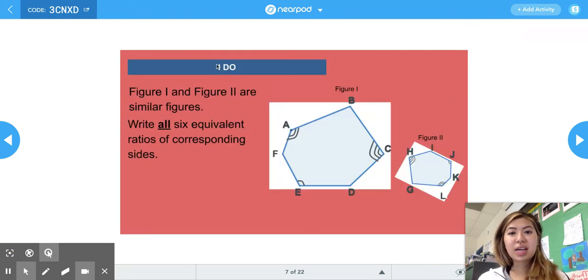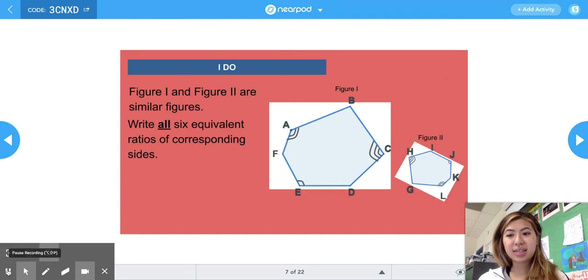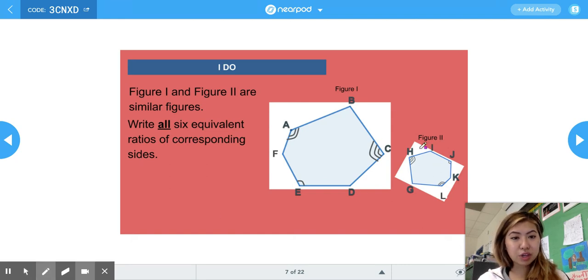So for this first I Do, it says figure one and figure two are similar figures. And as you can see, it's been rotated. So figure two is not the exact way we see figure one. And we have to write all six equivalent ratios of the corresponding sides. So what I can do to make it easier for myself is I can redraw the shape, this figure two, in the way that it is seen in figure one and then relabel it because that might be easier for me to decide what sides correspond to what sides.